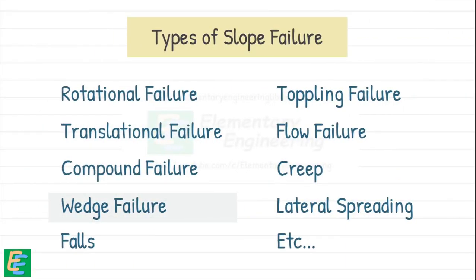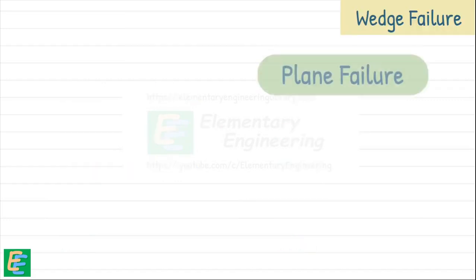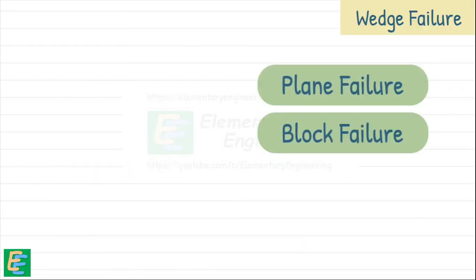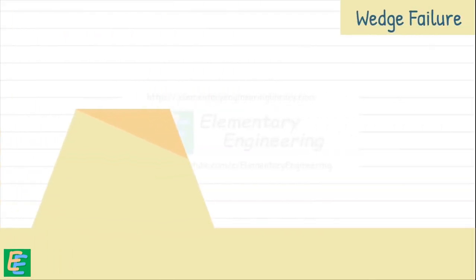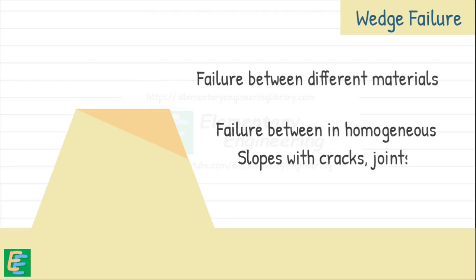Then there is wedge failure. Wedge failure, also known as plane or block failure, happens when distinct blocks or wedges of the soil become separated and slide along an inclined plane. This type of failure shares similarities with translational failure. Unlike translational failures which typically happen in infinite slopes, wedge failures can occur in finite slopes made of two different materials or in homogeneous slopes with cracks, fissures, joints or other weak planes. These weaknesses create the conditions for the wedge-shaped block to slide out.